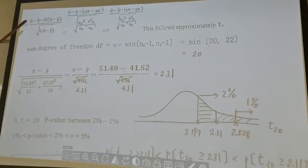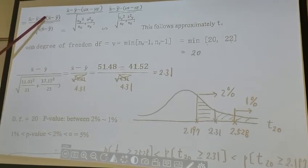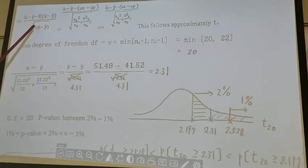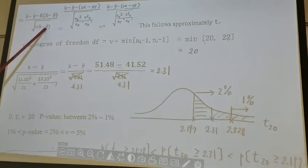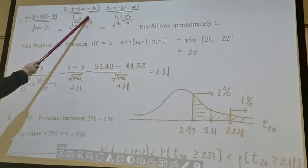This is what we just went over in the previous page. X bar minus y bar, subtract by its mean divided by standard deviation, converts to a z-score. But variance of x bar minus y bar is sigma x squared over nx plus sigma y squared over ny.